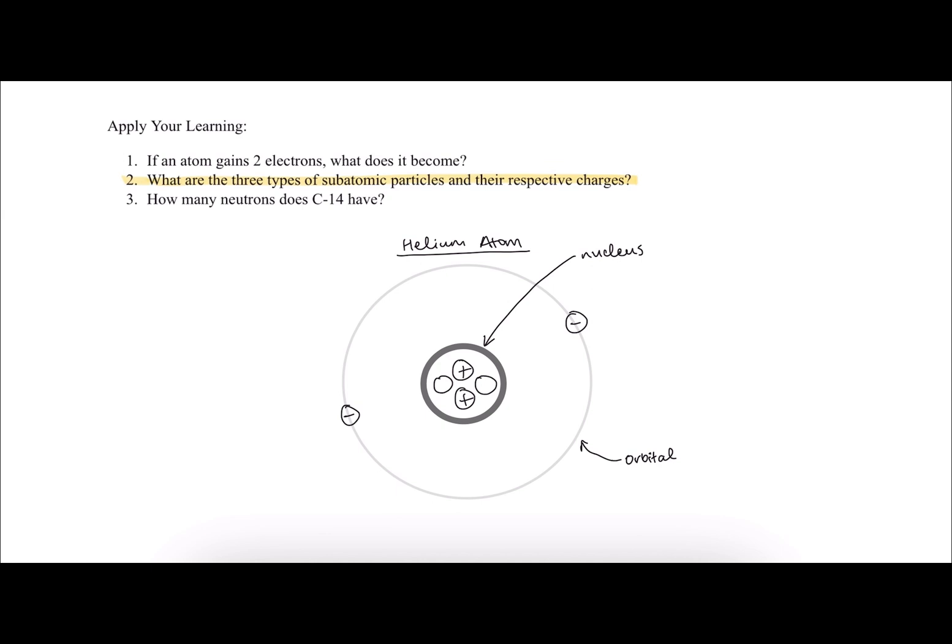So within the nucleus we have two types of subatomic particles. We have the positively charged proton, and it has a plus one charge.